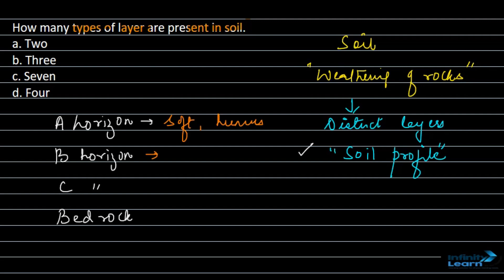B horizon has less amount of humus and it is hard and compact. C horizon consists of small lumps of rocks, okay, with cracks and all.